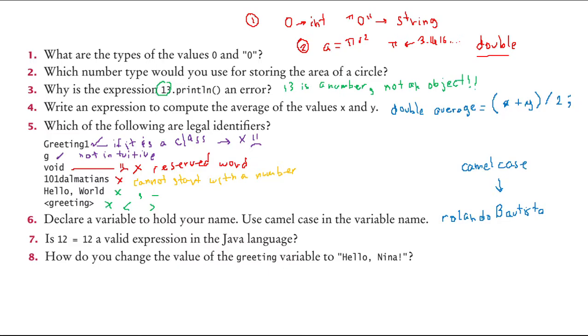Is 12 = 12 a valid expression in the Java language? The answer is no, because 12, the variable cannot be a number. So, sad face.